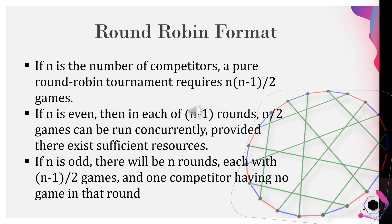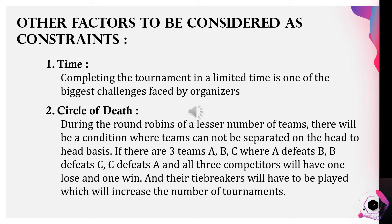If n is the number of competitors, a pure round robin tournament requires n(n-1)/2 games. If n is even, then in each of n-1 rounds, n/2 games can be run concurrently, provided there exist sufficient resources. If n is odd, there will be n rounds, each with (n-1)/2 games, and one competitor having no game in that round. Completing the tournament in a limited time is one of the biggest challenges faced by organizers.